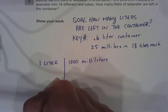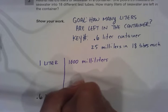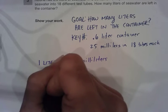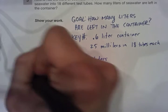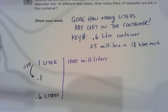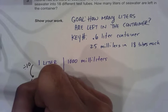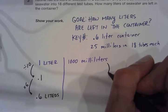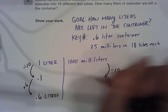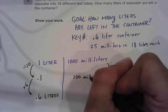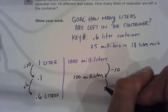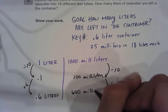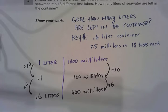Our goal is to figure out what 0.6 liters is in milliliters. I know if I do 1 divided by 10, I get 0.1, and then 0.1 times 6 gives me 0.6. So what you do to one side you must do to the other. Dividing by 10 gives 100 milliliters, then times 6 gives us 600 milliliters. Now we know the size of the container in milliliters.